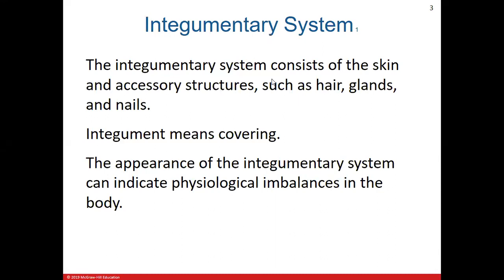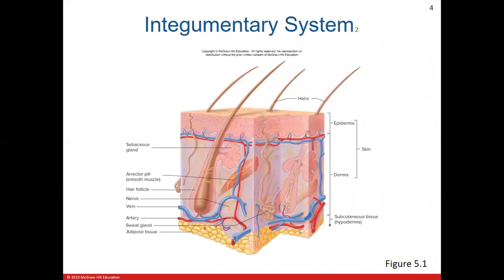One thing you should do to help you understand the system is to get familiar with the skin diagram, figure 5.1. You can refer back to this as you go through the video or your notes. You can see two layers of the skin: the epidermis on the superficial layer and the dermis which is deep to the epidermis. The dermis has many different structures including the hair follicle, glands, blood vessels, and nerves, whereas the epidermis does not have really any of those types of structures.